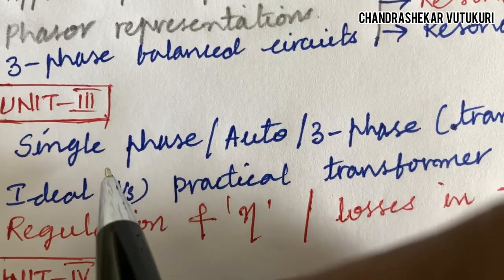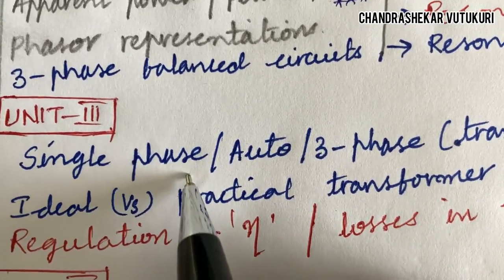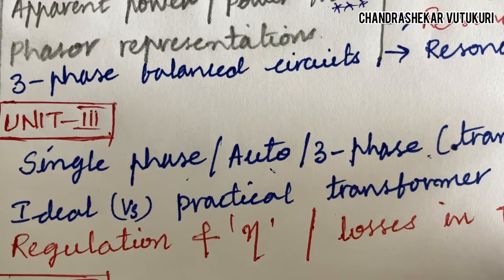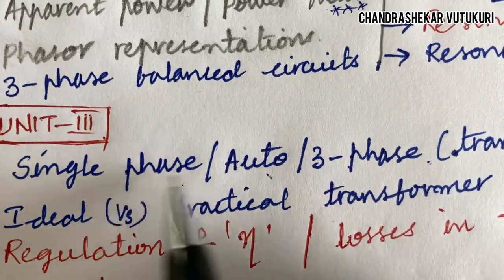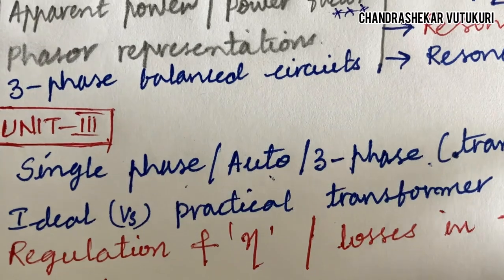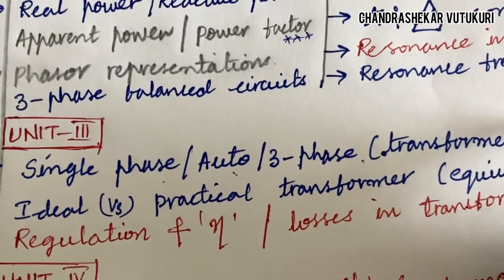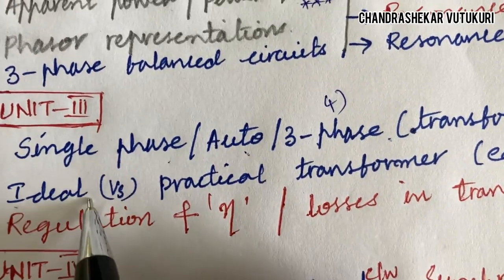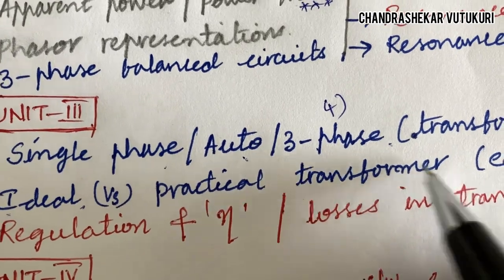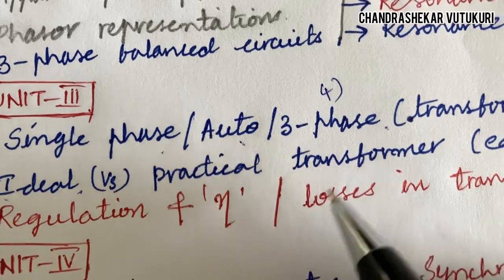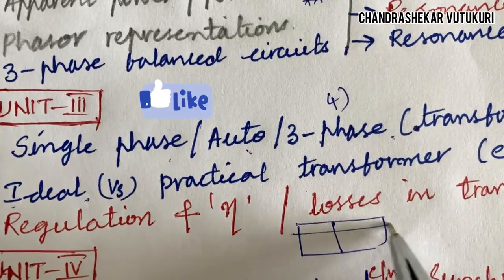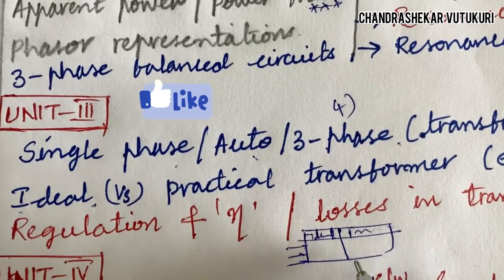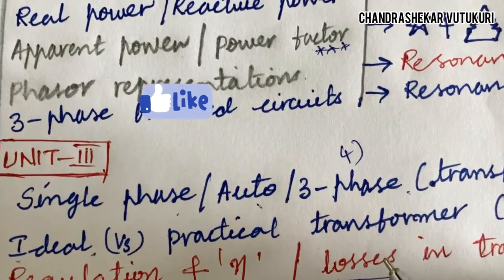Unit 3 is very short in its structure. You are supposed to work out the construction and working principle of single-phase, auto, or three-phase transformer connections, and from this part you will be getting short questions. There are no separate short questions given from unit 3 — you need to learn all the concepts in depth. You may get a one-mark question or directly a 10-mark question from transformer connections with problems. Ideal versus practical transformers — defining each may be a short question, or if it is long, they may ask for the differences in a tabular column.